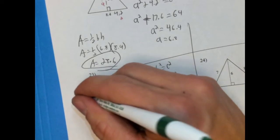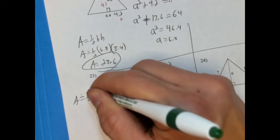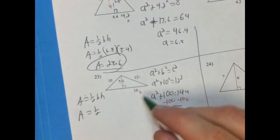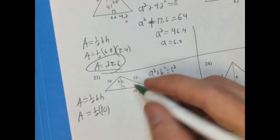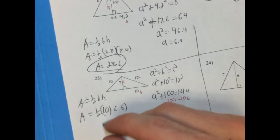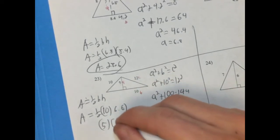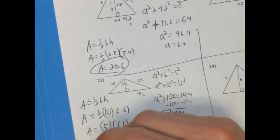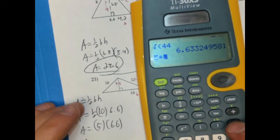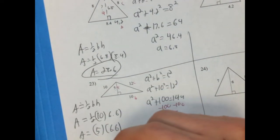Our height is going to be 6.6. So area of a triangle is one-half base times height. Area equals one-half. And I won't screw up the order this time. Base is 10, and the height is 6.6. So one-half of 10 is 5. 5 times 6.6, I'll write out each step this time. 5 times 6.6 equals 33. So the area is roughly 33 square units.